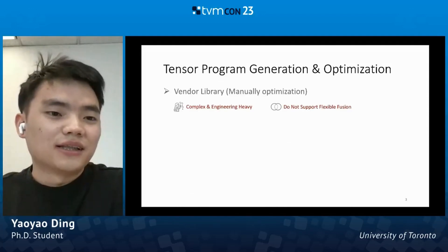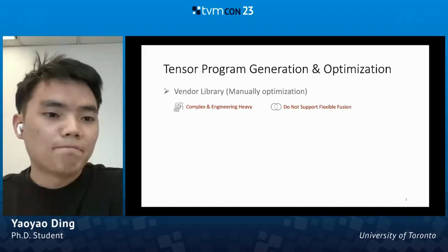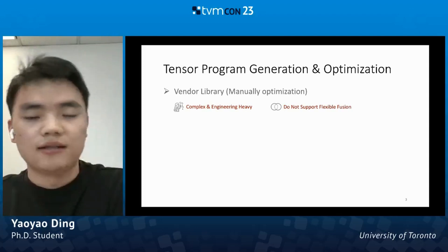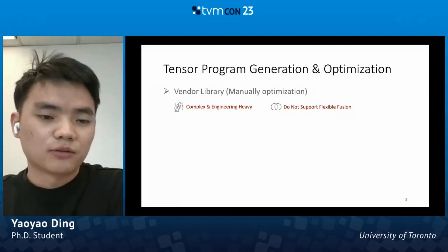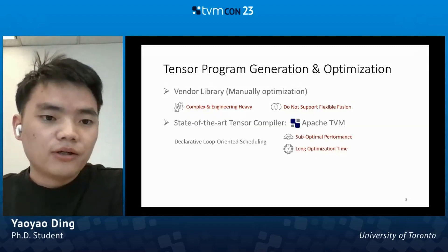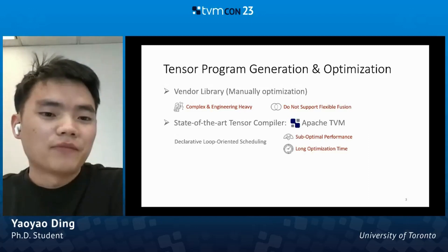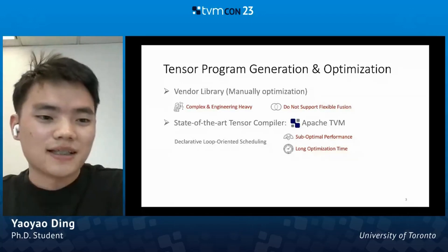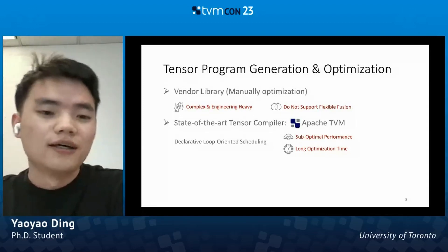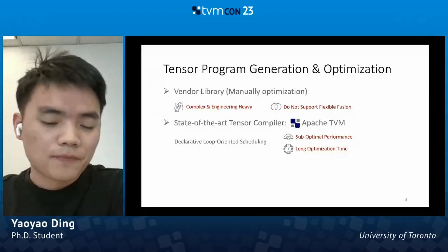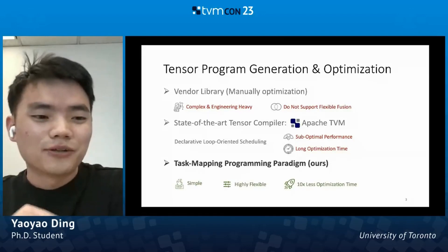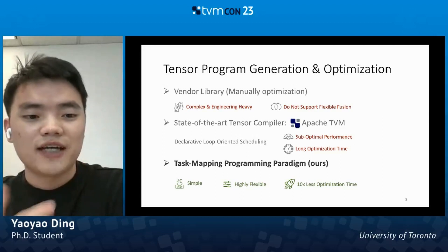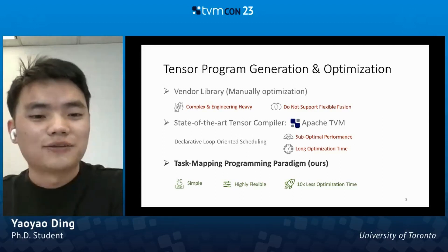There are different ways to generate tensor programs and apply optimization. For example, we can use a vendor library. However, by manually writing these tensor programs, it's very complex and engineering-heavy, and it's very hard to support flexible fusion. We also have deep learning compilers such as TVM. However, because it mainly relies on what we call declarative loop and scheduling, there are some optimizations not related to loop transformations that are hard to express, so it can suffer from sub-optimal performance and long tuning time. In this work, we propose a new way to construct tensor programs called the task mapping programming paradigm. It's simpler compared with manually writing tensor programs, it's highly flexible to implement optimizations, and it can greatly reduce tuning time.